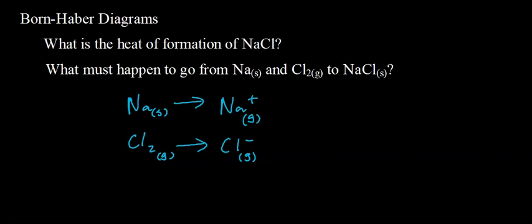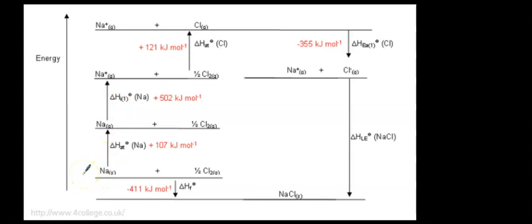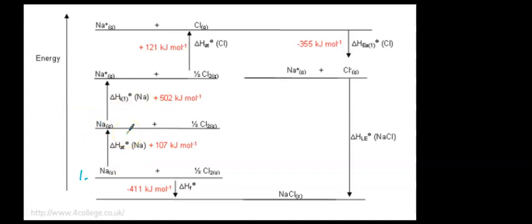Looking at the diagram, we start with our reactants: sodium solid and chlorine gas. The first step is to turn that sodium metal — a whole bunch of sodium atoms held together by metallic bonds — into individual sodium atoms. This is ΔH atomization (ΔH_AT), where you take something and break it up into individual atoms. This process requires energy: 107 kilojoules per mole of sodium.